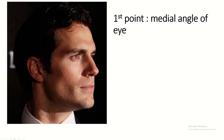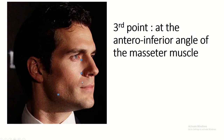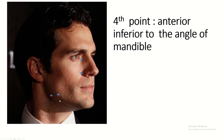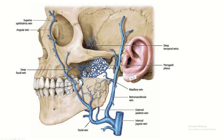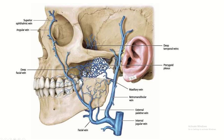Surface anatomy of the facial vein. First point: medial angle of the eye. Second point: just lateral to the ala of the nose. Third point: at the anterior inferior angle of the masseter muscle. Fourth point: anterior to the angle of the mandible. Join these points — this is the facial vein.